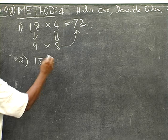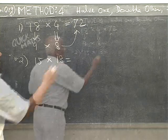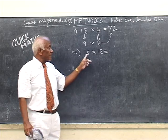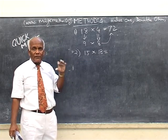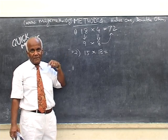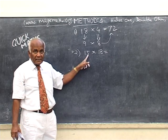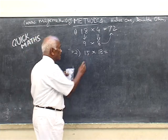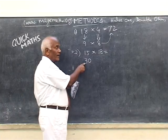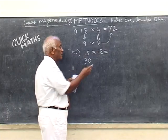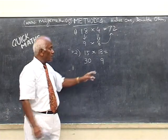Suppose 15 into 18. Here 15 is a good number, 5 ending number is a good number because if you double it, it becomes a 0 ending number. So if I double 15, what do I get? 30 which is easy for calculation because 30 means you do only by 3, you multiply by 3 and put a 0. So it is simple, mental work. So 18, if you half it, it is 9.